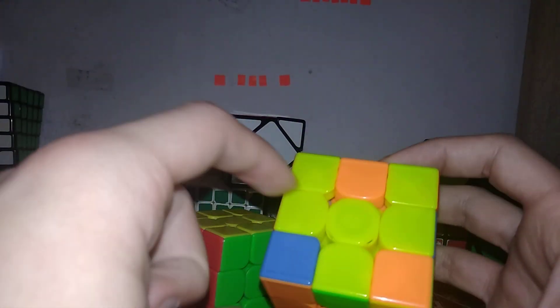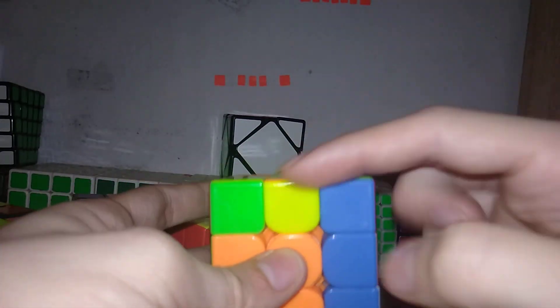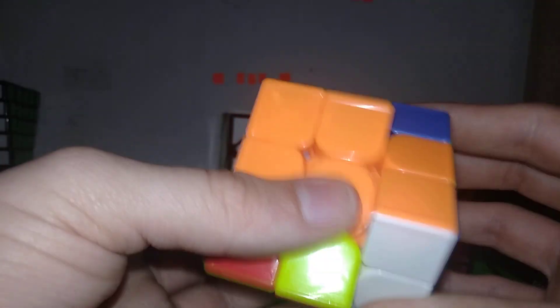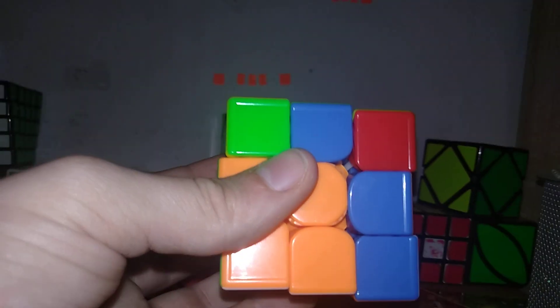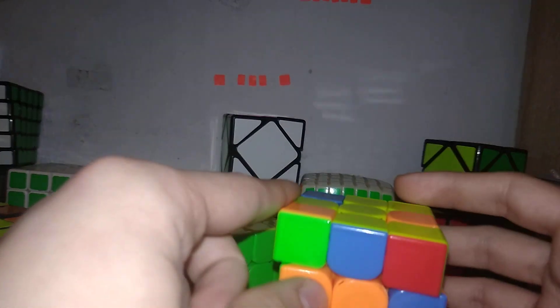Next F2L number 41. So in this case you have three edges that are oriented. You can do various things for this. You can store the edge here and then solve the pair from this angle. You can store the edge with F moves or you can do a fancy thing, that is put the misoriented edge on the right, pull the pair out, F' X C F' R U R' R U R'.